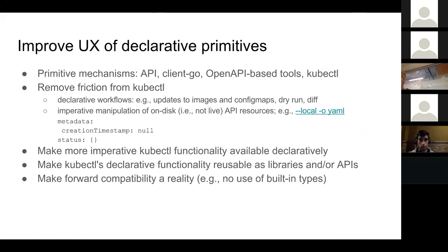One thing you can do - and Joe Beda actually wrote a short blog post showing how this can work - is you can spit out the generated JSON or YAML to a file, and then that gives you a resource representation you could use with kubectl apply. You can say --local --dry-run and spit out the YAML. But there's a lot of cruft in the YAML that gets generated due to various issues with how we express the schema in our types.go files. Everybody's probably seen creation timestamp null or empty status in resources they spit out. That creates friction because people feel like they have to remove those lines by hand every single time. We should just clean that up.